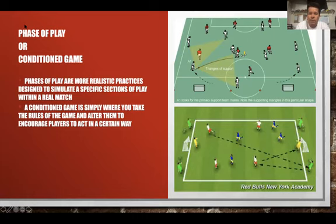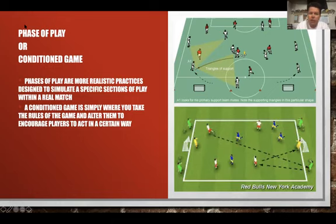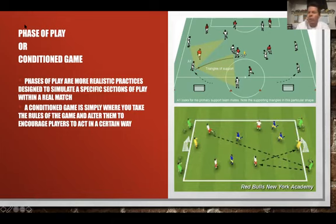A conditioned game is where you take the rules of the game and alter them to encourage players to act in a certain way. It's a little less realistic, but that's not a bad thing — players may need that extra step before the actual game. For example, if you're working on crossing and finishing, you don't require teams to score from a cross, but you encourage it by giving extra points if they do. This way players are trying to do it in a realistic environment while achieving the session goal.